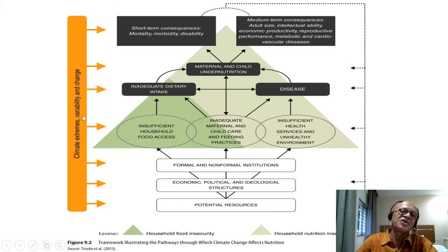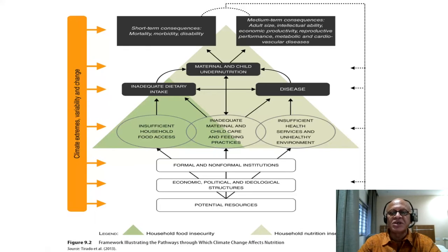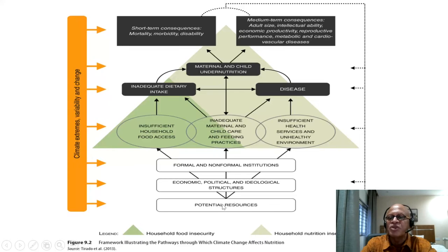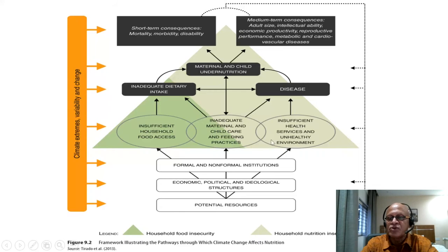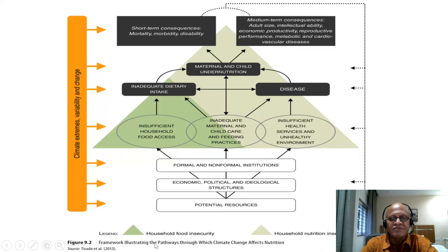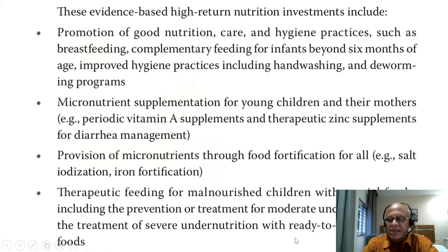Here are climate extremes, variability, and change feeding into household food security and household nutrition security. Looking bottom-up, we have economic, political, and ideological structures that affect food and nutrition security. Formal and non-formal institutions are involved. There is insufficient household food access, inadequate maternal and child care and feeding practices, overlapping into nutrition insecurity, and insufficient health services and unhealthy environment.